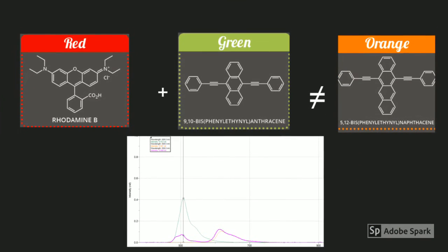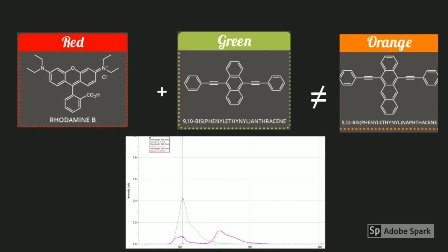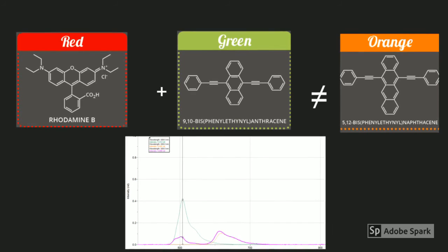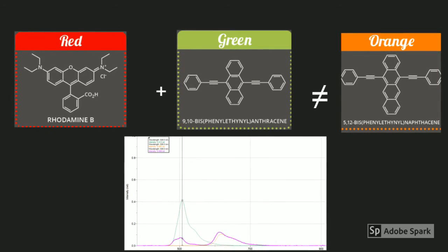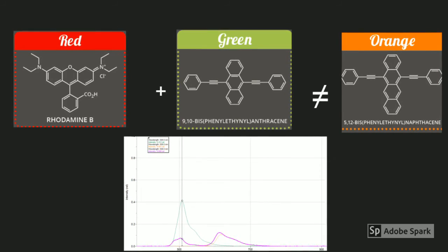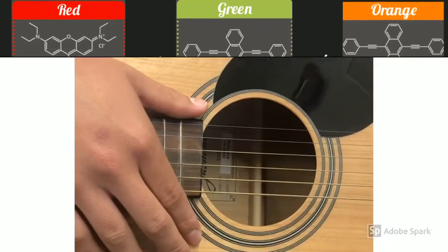When red dye and green dye are mixed, their molecular structures don't make the orange molecular structure, meaning the lambda max for orange would not show up on the emission spectrum.